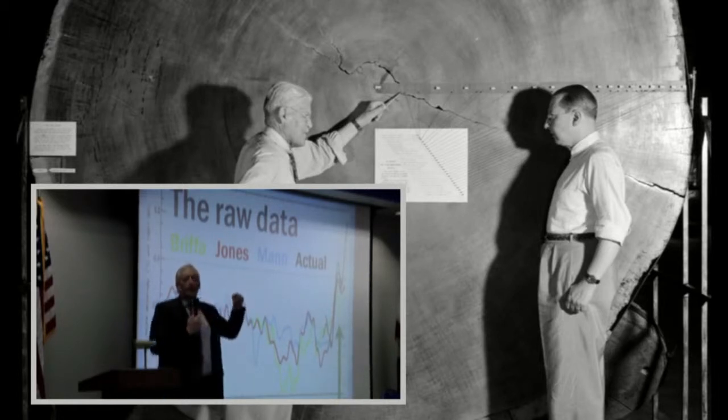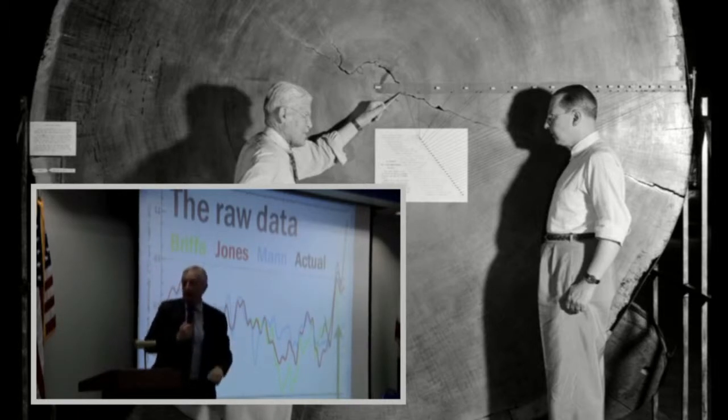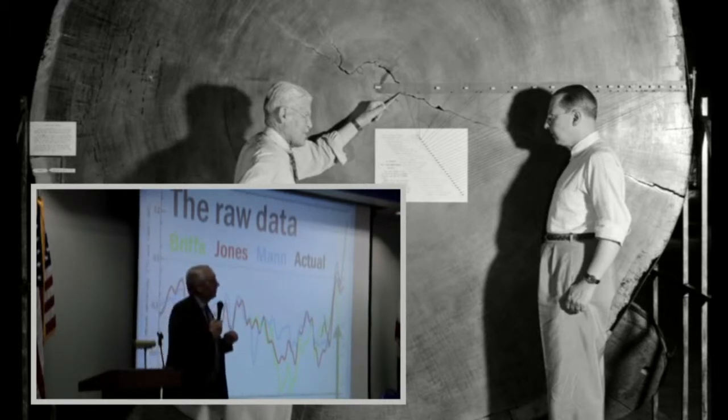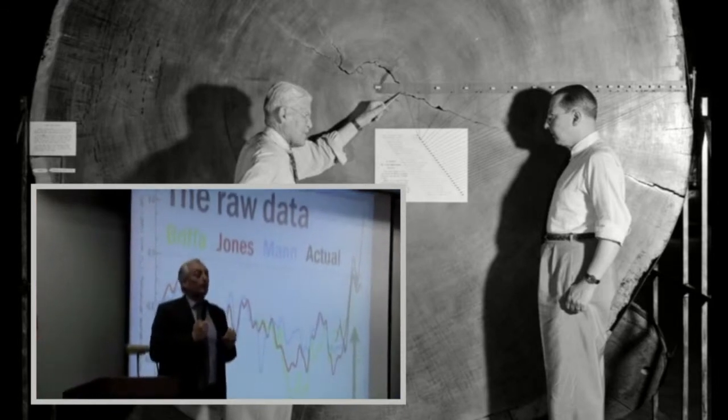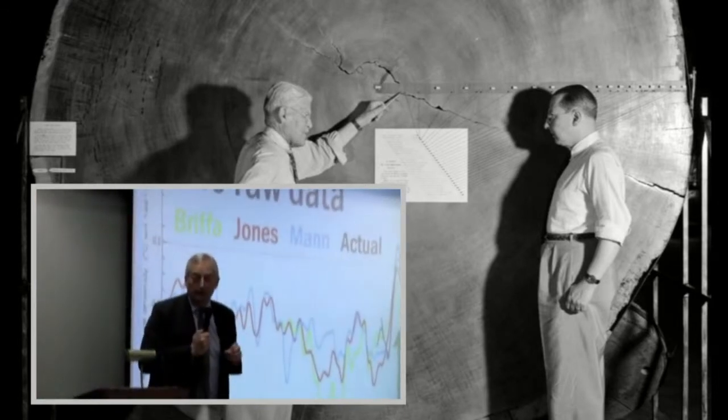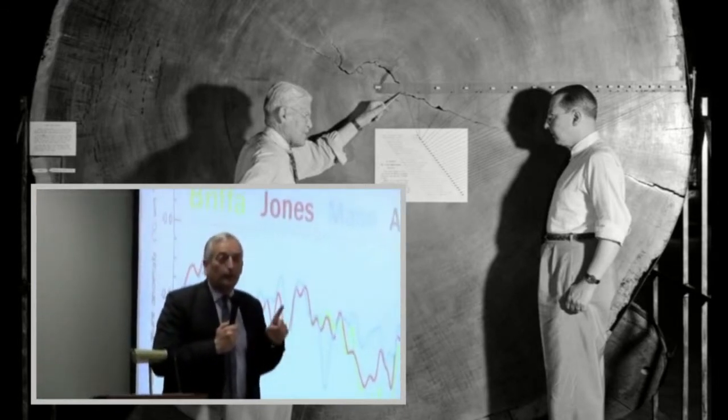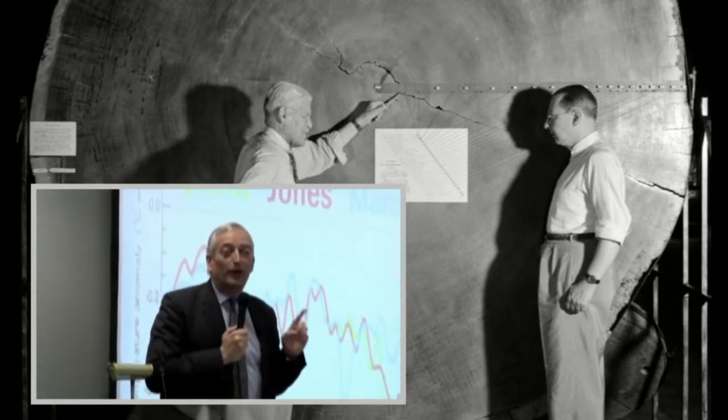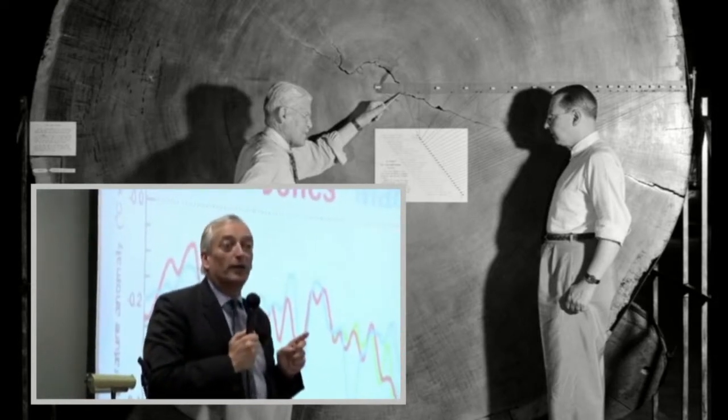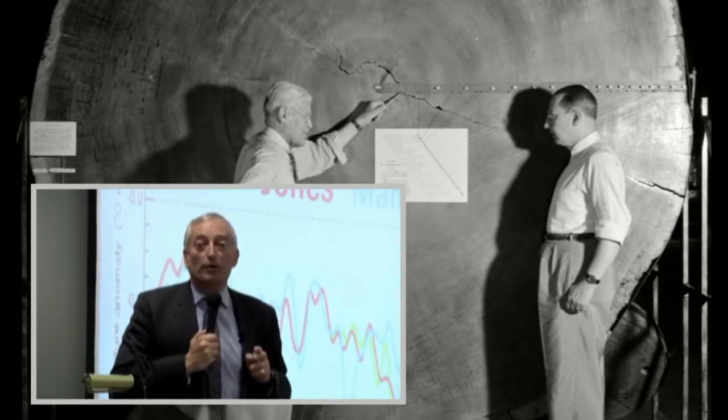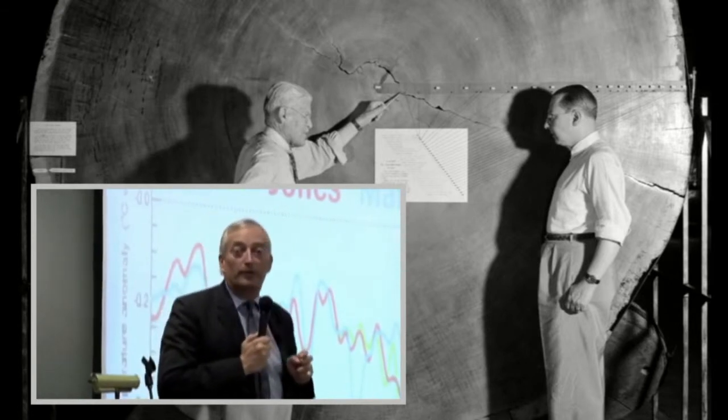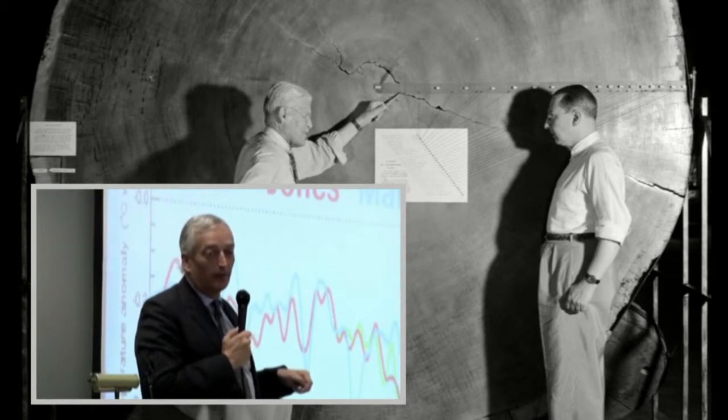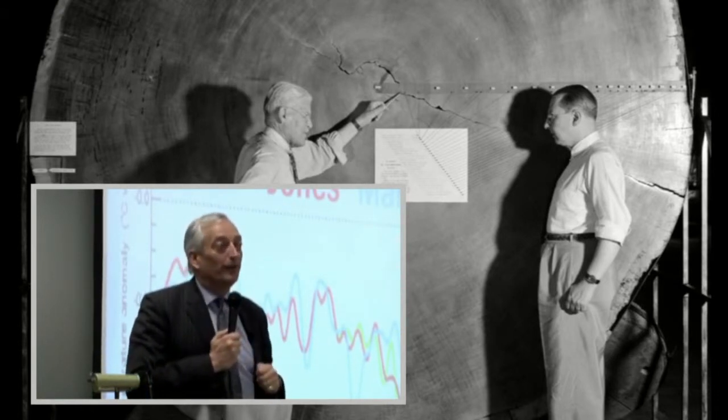And so what we're getting there is that the tree rings were predicting that there'd be a huge decline in temperatures from 1960, but the thermometers were telling us that there wasn't a huge decline, there was something of an increase since 1960. And that was the decline that they wanted to hide. They wanted to hide the fact that tree rings are no good for telling us about past temperatures because you get these huge inaccuracies. Shall we see how they did it?